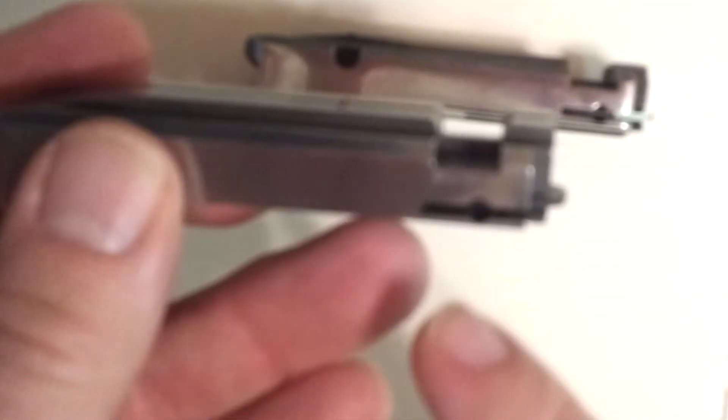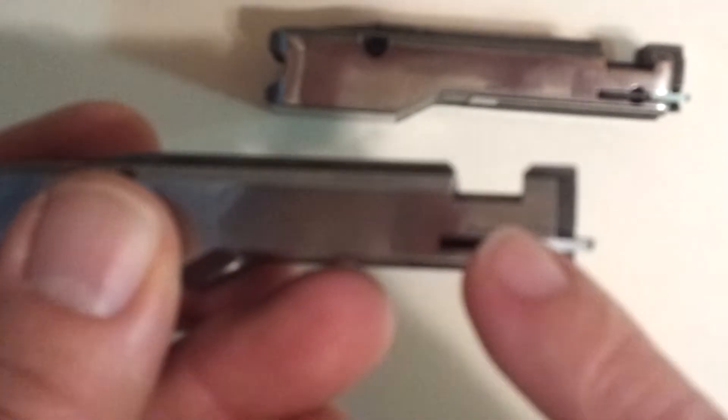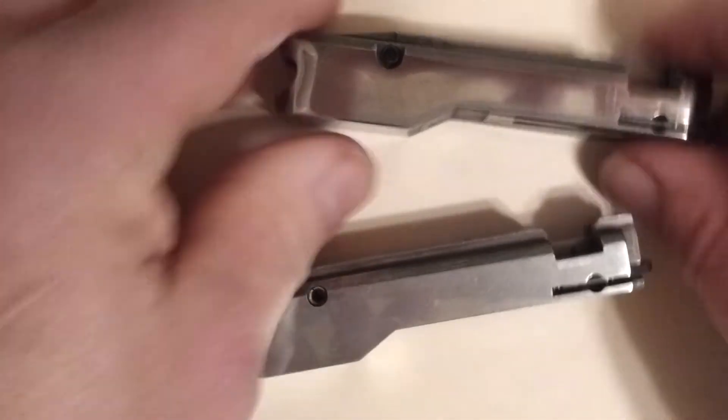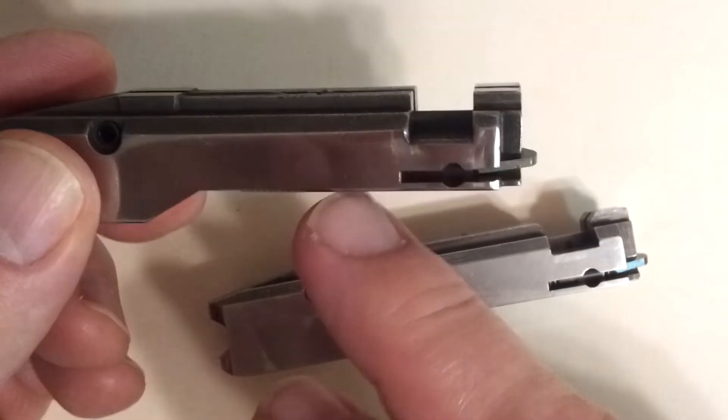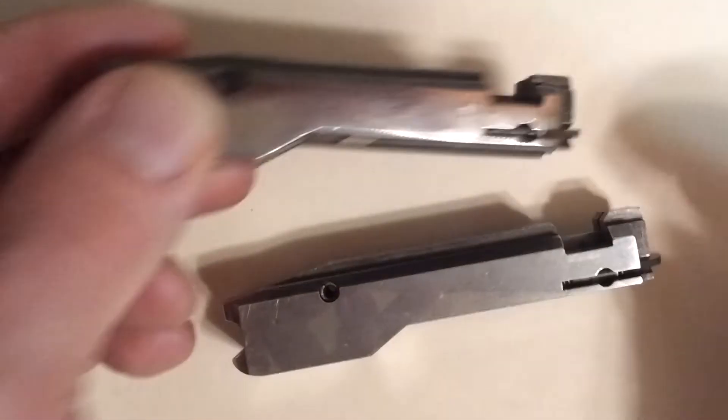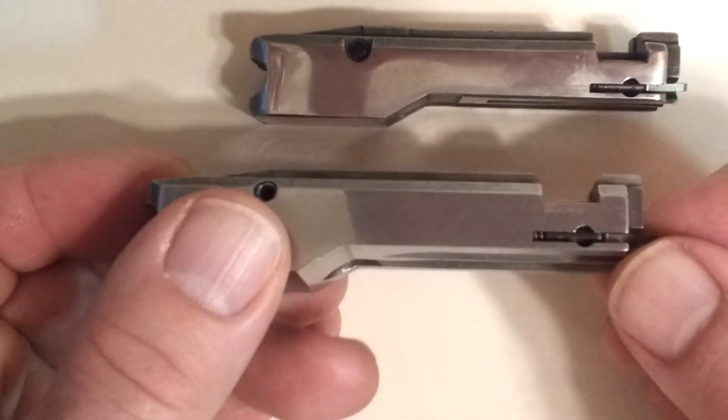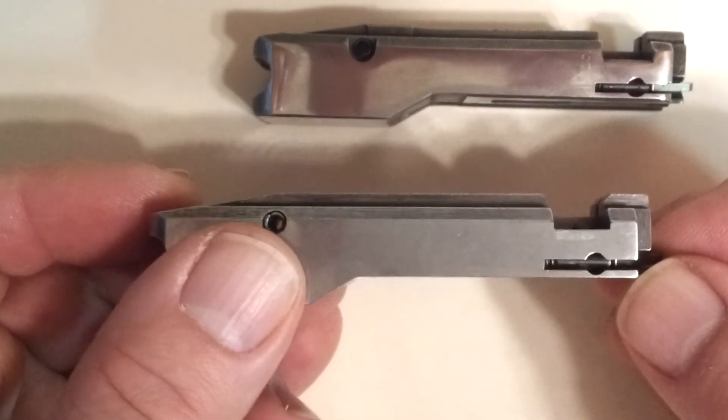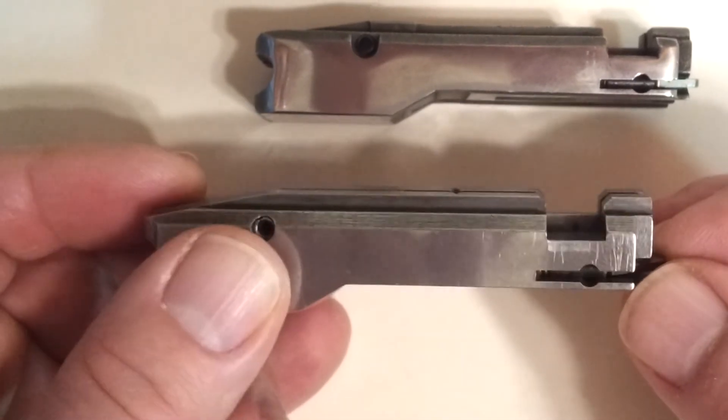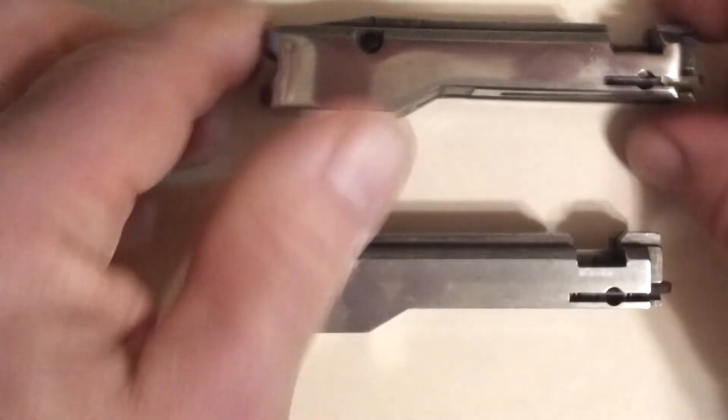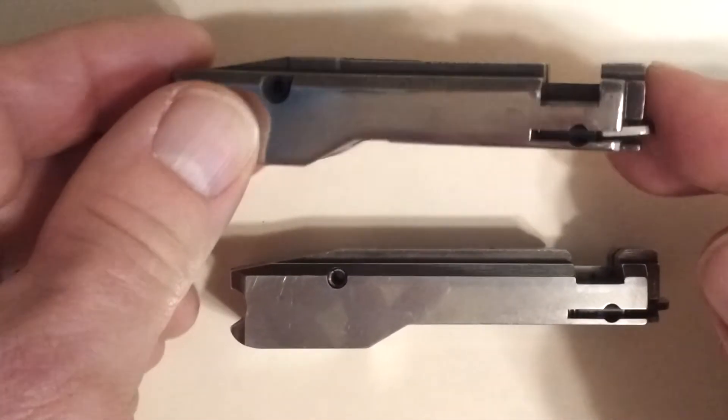Sixth, the slot for the bolt handle is chamfered. You can see the diagonal lines at the top there. That chamfer makes it a lot easier—here's the OEM bolt with straight cut with straight sides on the slot—makes it a lot easier to get the bolt handle into the bolt when you're reassembling the rifle because the bolt handle will hit these ramps and slide into place whereas it's got to be perfectly positioned with the OEM bolt.